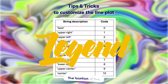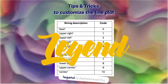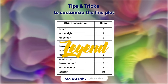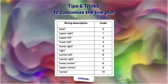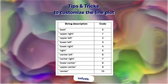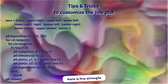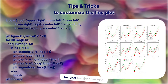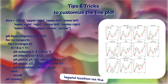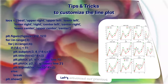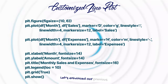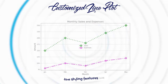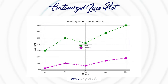The location of the legend is determined by the loc parameter, which can take the following values. Here is an example showing the different options for legend location via the loc parameter. Let's enhance our previous line plot by applying the styling features we have explored.